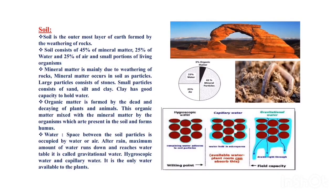Soil is the outermost layer of the earth, formed by the weathering of rocks. Soil consists of approximately 45 percent mineral matter, 25 percent water, 25 percent air, and a small portion of organic matter. Organic matter is formed by dead plants and organisms which undergo decomposition. Mineral matter is formed by the weathering of rocks, and water is supplied mainly by rain.